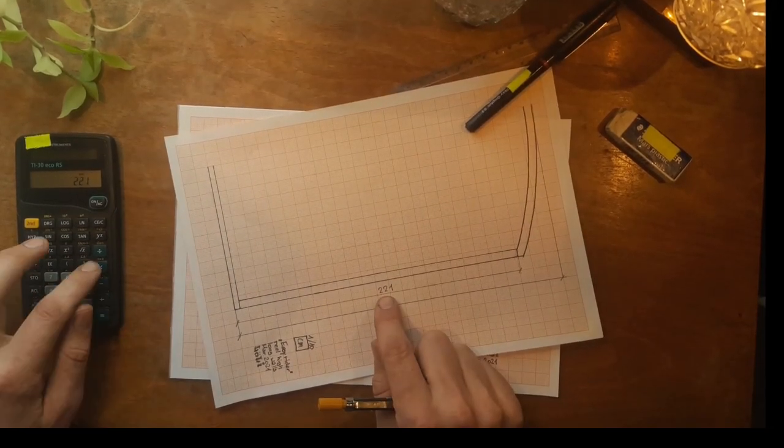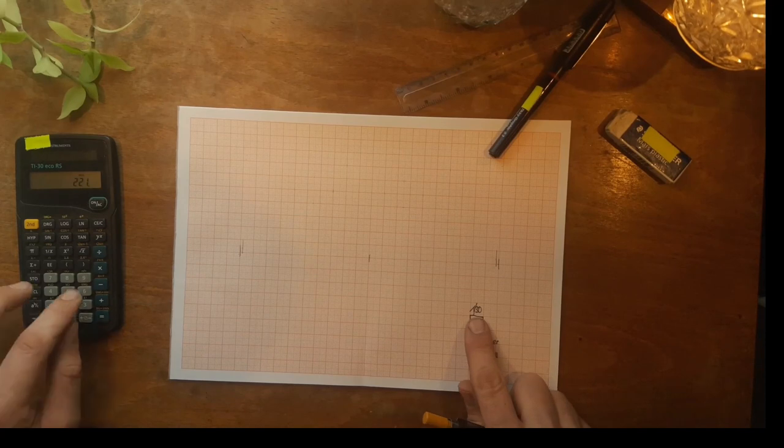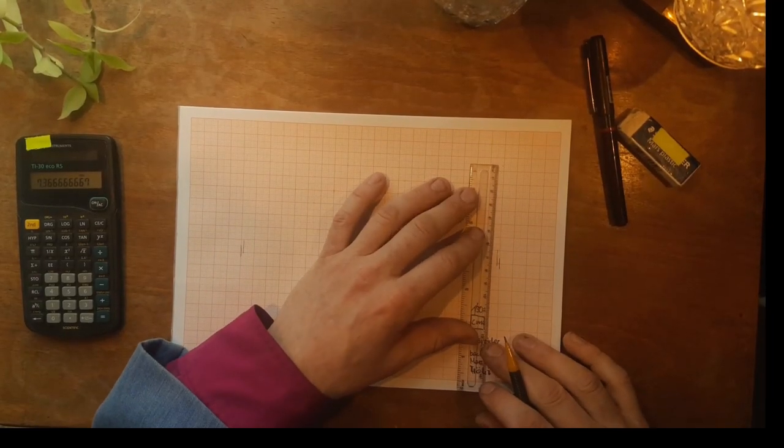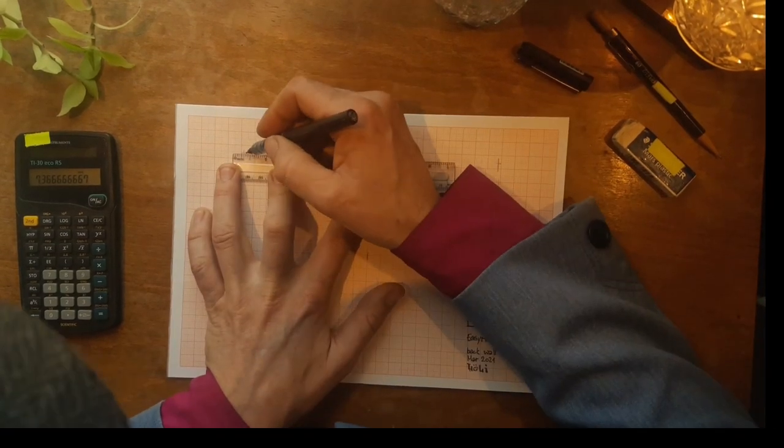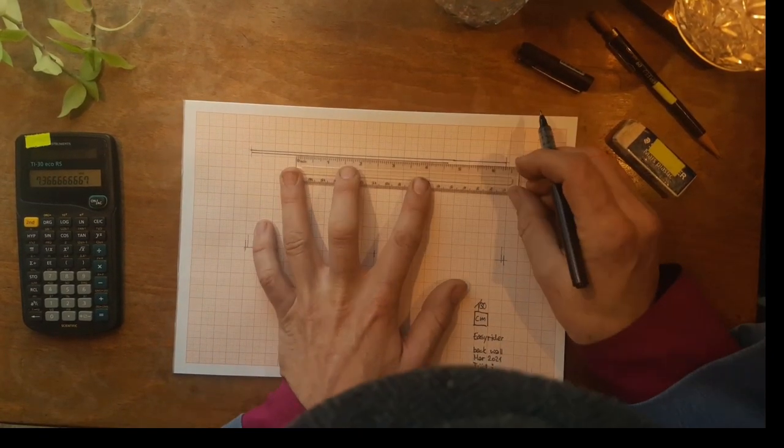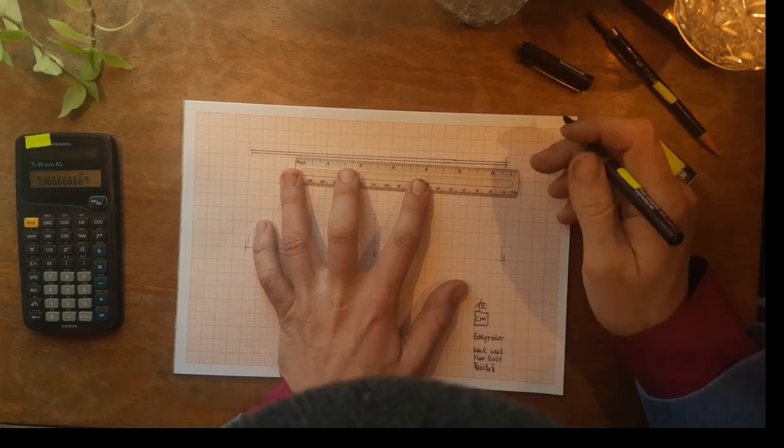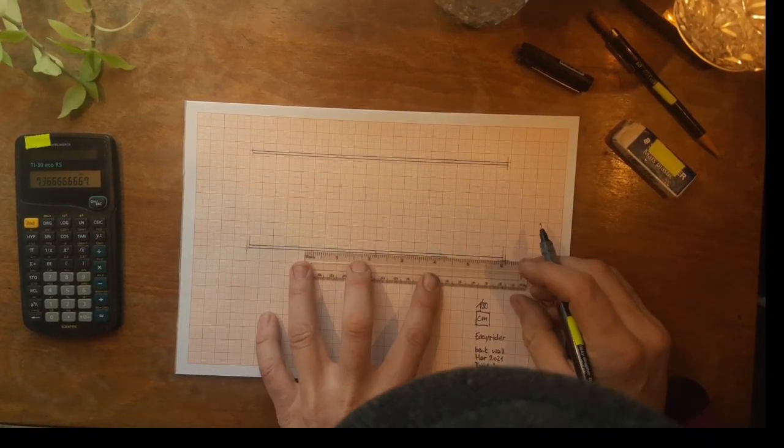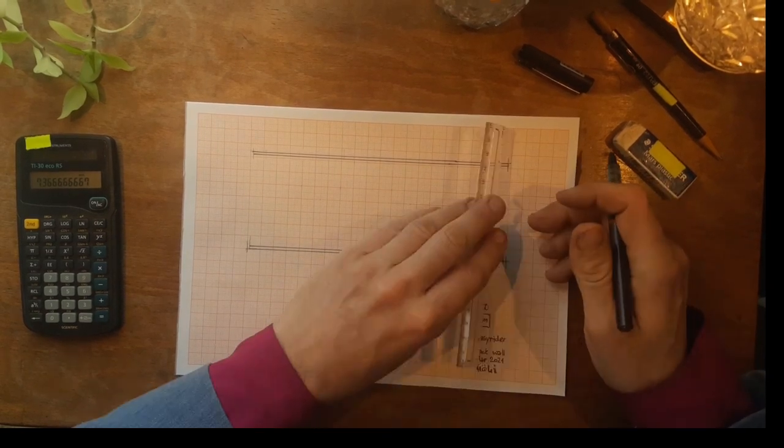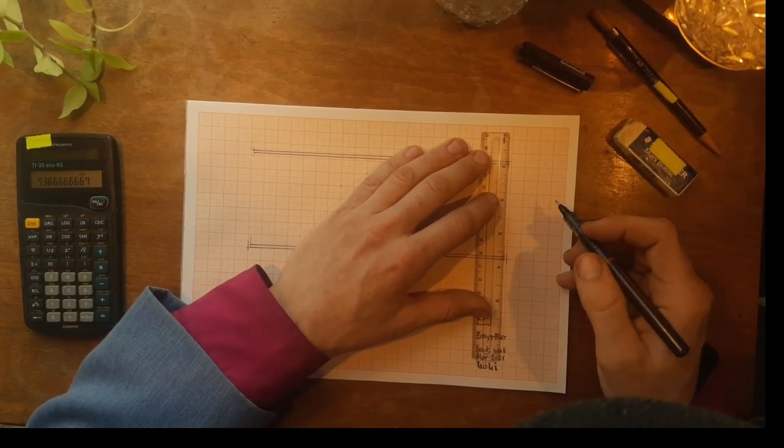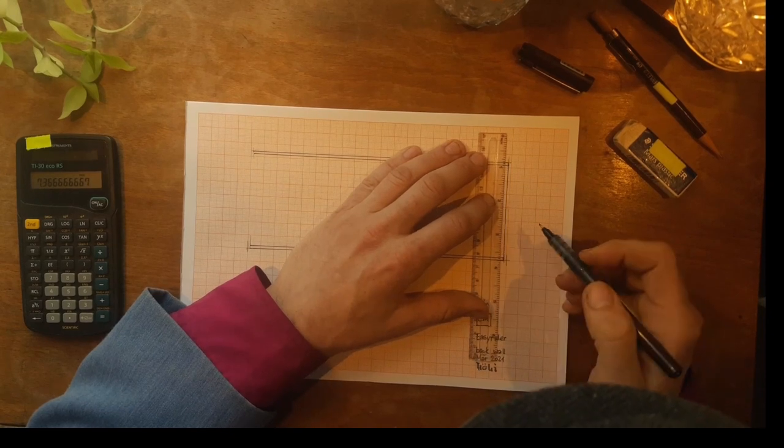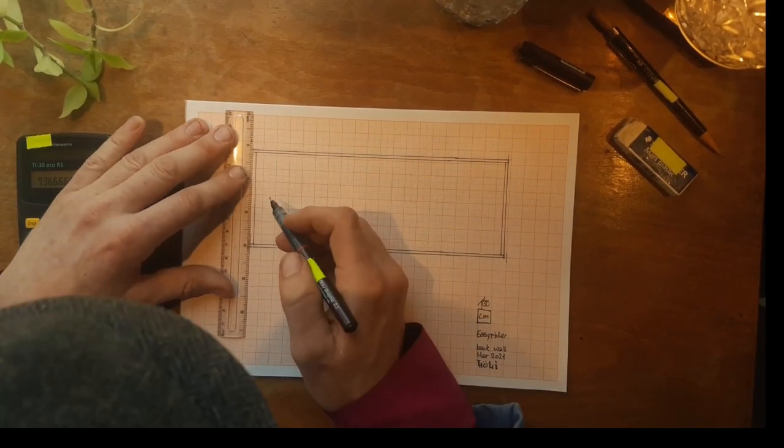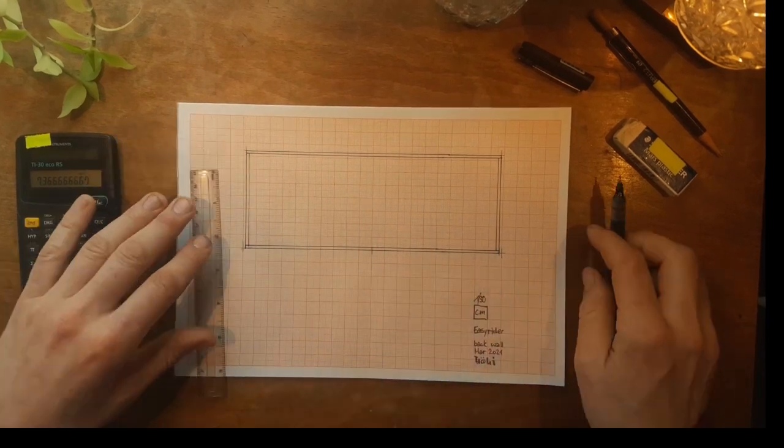Okay, I divide 2 meter 21 by 30, making little points and drawing the upper rafter, the lower one, and that's the size of the wall.